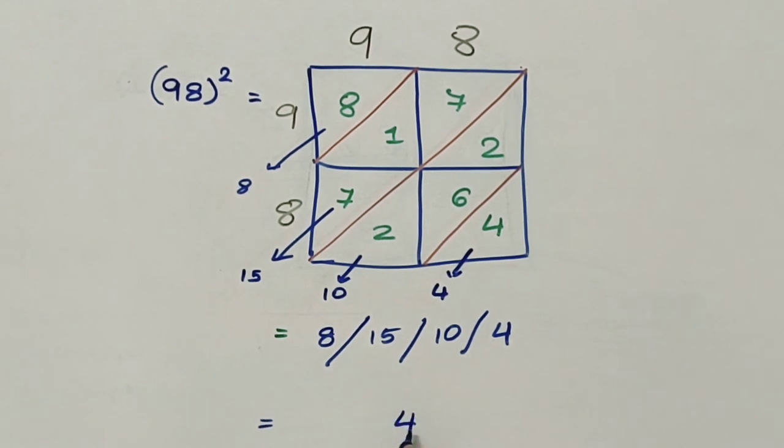So 4, 0. I will forward 1. So 15 plus 1 becomes 16. So 6 and I will again forward a 1. So this becomes 9.